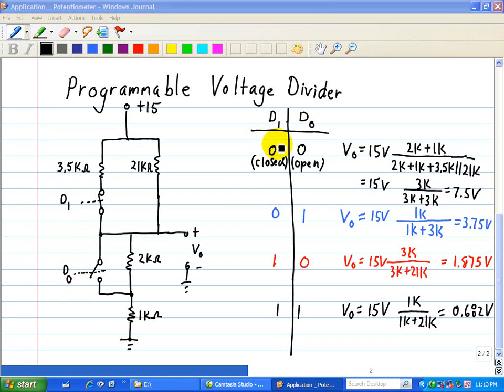The state when it's 0,0 means that it's closed for D1 and open for D0. Now let's look at when D1 is closed. We see that 3.5 kiloohm is in parallel with 21 kiloohms,